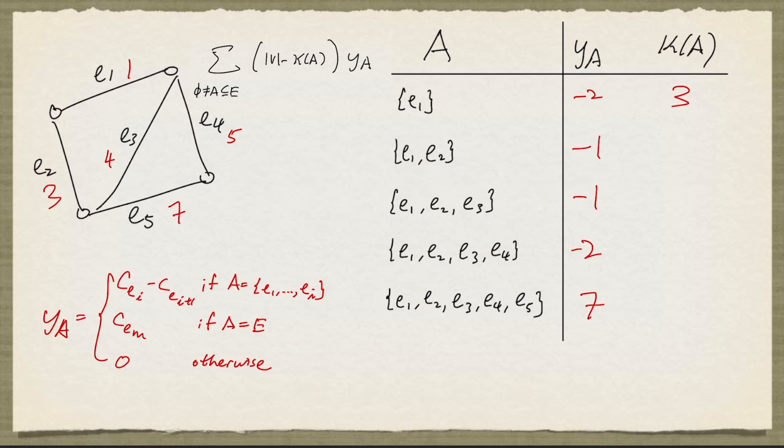If we have e1, e2 as edges, we'll have 2 components. If we take e1, e2, e3, we have again 2 components. If we take e1, e2, e3, e4, we'll just have 1 component. Same for taking the entire edge set.